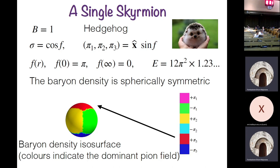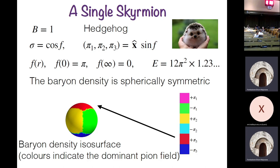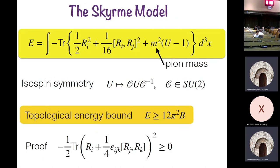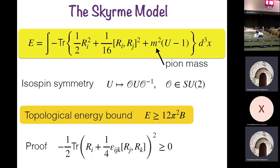The solitons localize because of the quartic term — the Dirichlet energy and the quartic term scale differently in three space dimensions, which forces a size scale that localizes the solution.